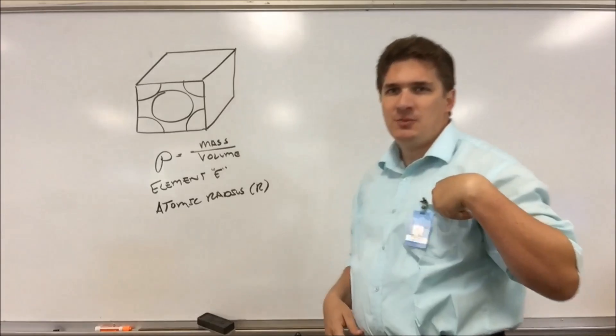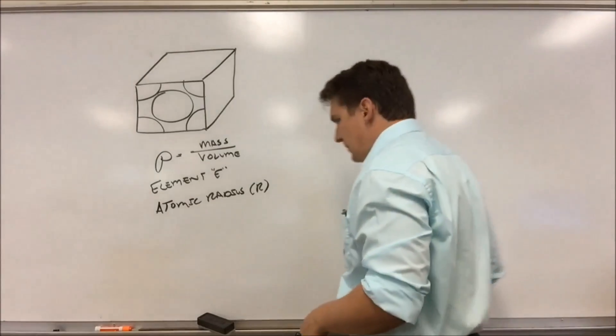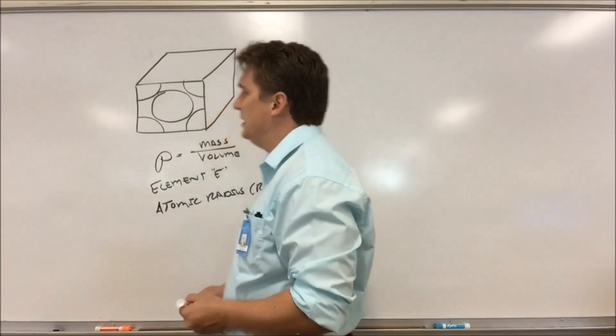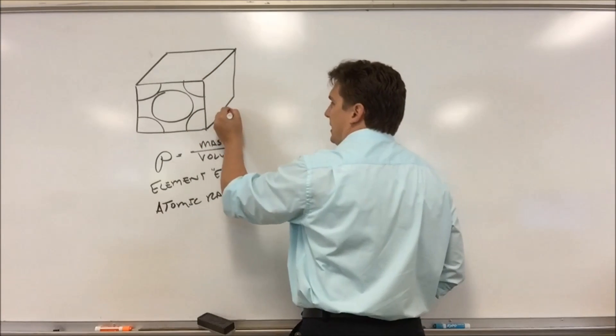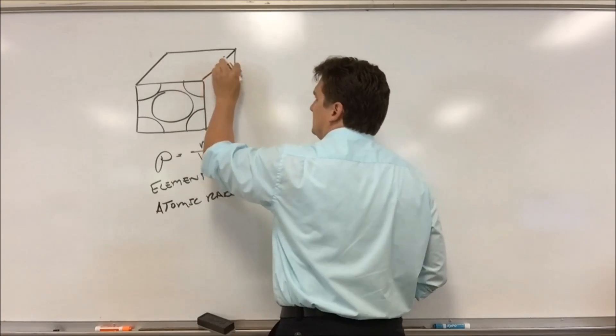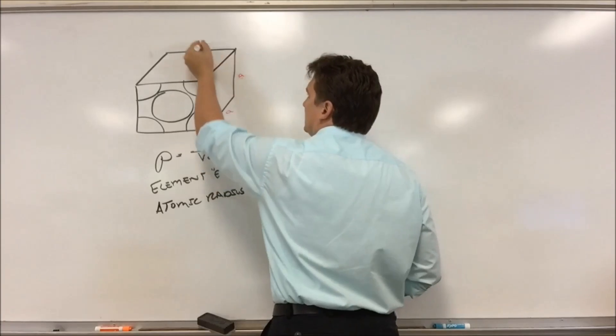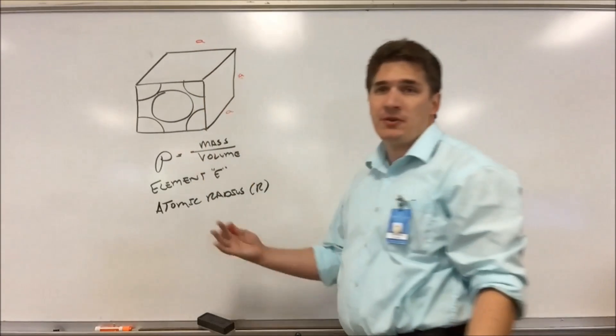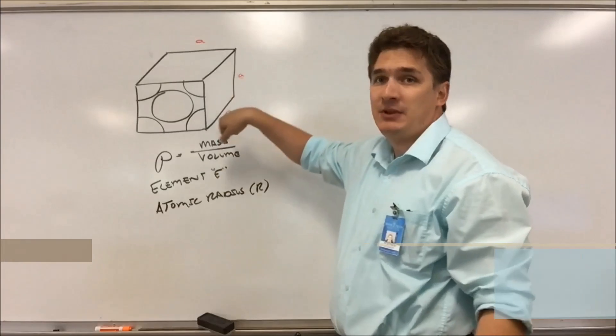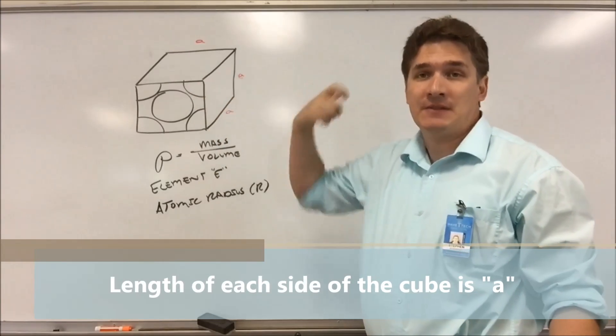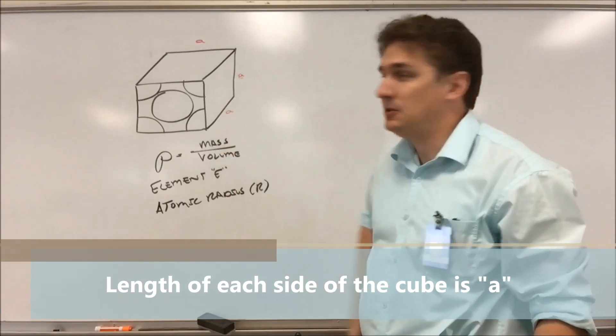So what's the volume of this cube? Well to figure it out, we need to figure out the length of each side of the cube. So a cube has a length A, A, and A. This is a cube, all three sides are the same. So if we just figure out the length of one side, we can figure out the volume of the whole cube.